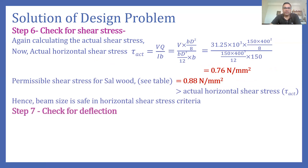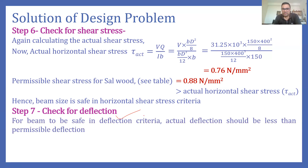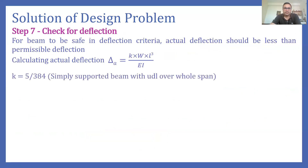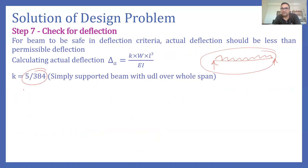The next step is checking the beam for deflection. For the beam to be safe, actual deflection must be less than permissible deflection. Actual deflection is calculated using δ = k × W × L³ / (EI). Since the beam is simply supported carrying UDL, the factor k = 5/384, as discussed in part two.